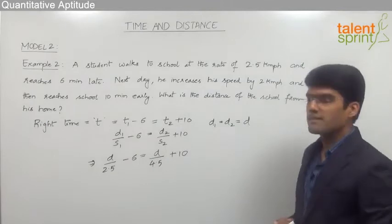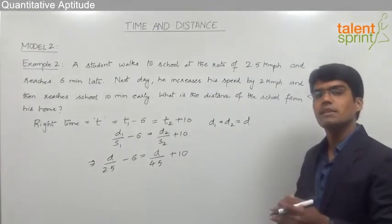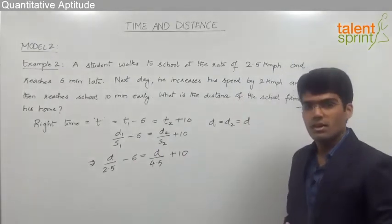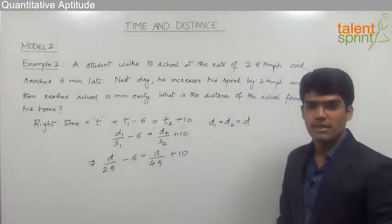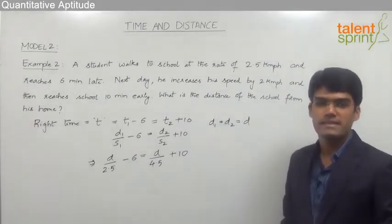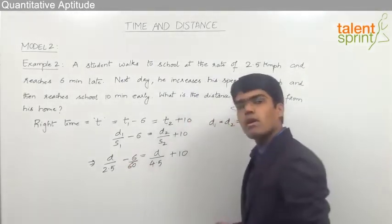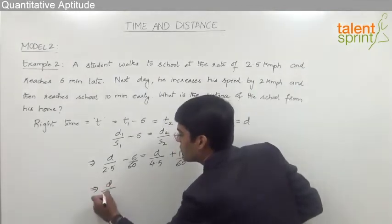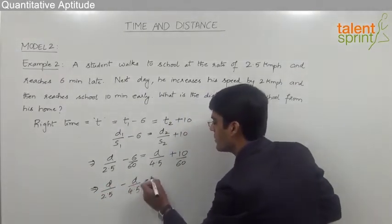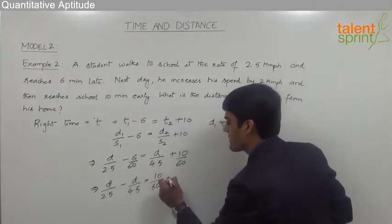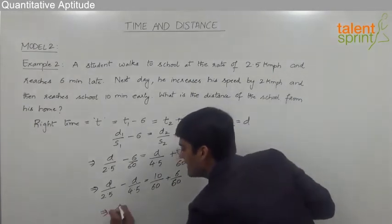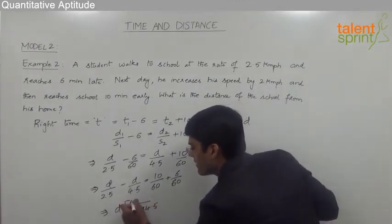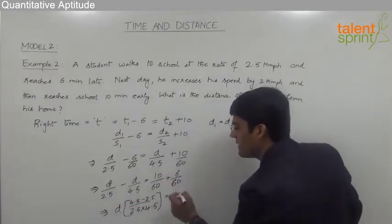Before substituting, the units must be balanced — speed is in kilometers per hour but time is in minutes, so we convert minutes to hours by dividing by 60. Substituting: d divided by 2.5 minus d divided by 4.5 equals 16 by 60. Taking d common and finding the LCM gives d times (4.5 minus 2.5) divided by (2.5 times 4.5) equals 16 by 60.